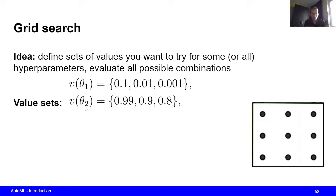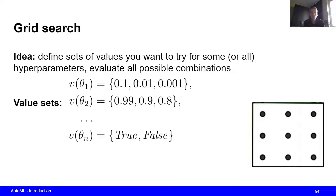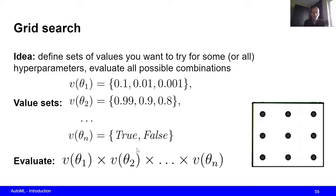For the second hyperparameter, for example momentum, we define the values we want to try out. More generally, we can have any number of hyperparameters — say n hyperparameters — and for the nth hyperparameter we investigate specific values. We then form all combinations, evaluating their Cartesian product which gives us all possible combinations. Note that this evaluation is often done on a validation set, not the training set, to avoid a biased view and overfitting.